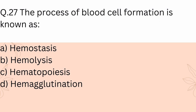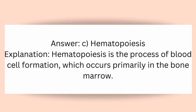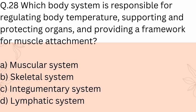Question 27: The process of blood cell formation is known as? A) Hemostasis, B) Hemolysis, C) Hematopoiesis, D) Hemagglutination. Answer: C) Hematopoiesis. Explanation: Hematopoiesis is the process of blood cell formation, which occurs primarily in the bone marrow.